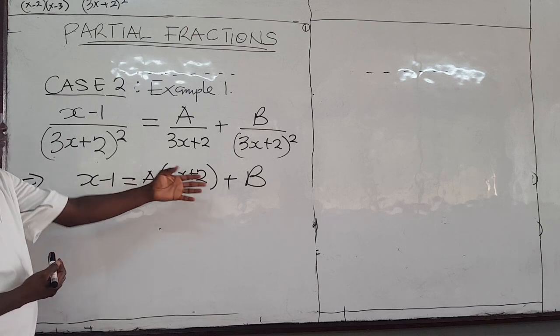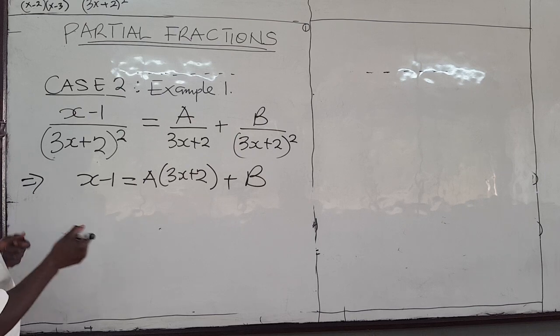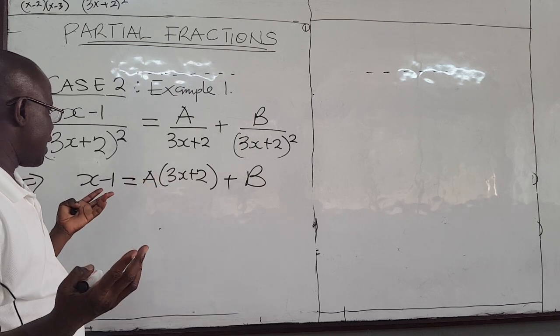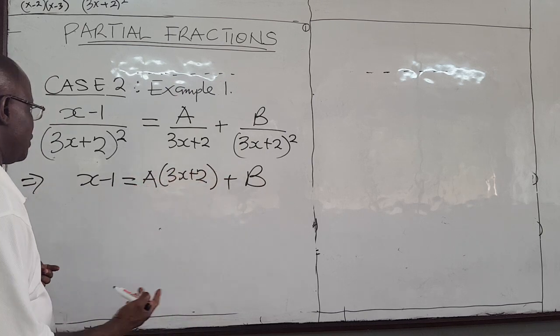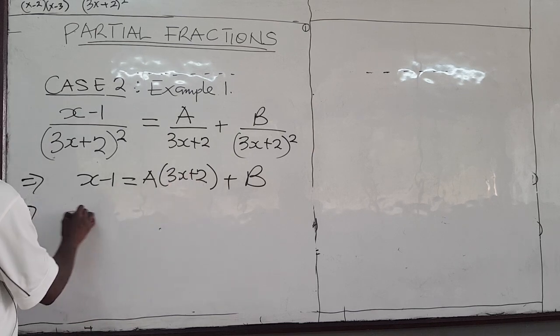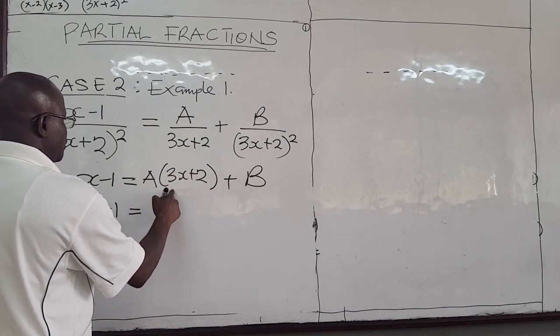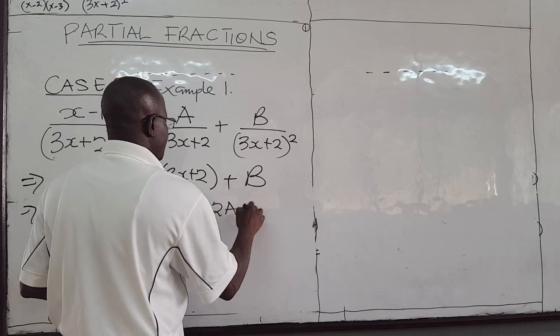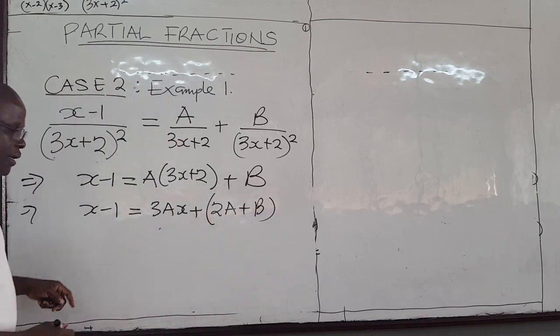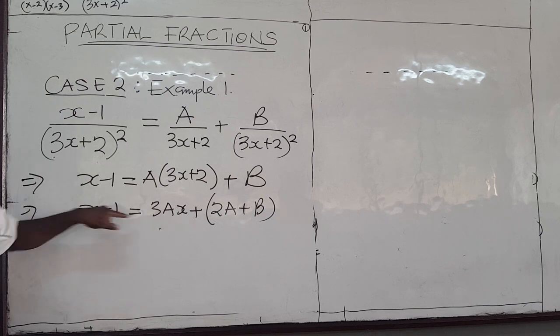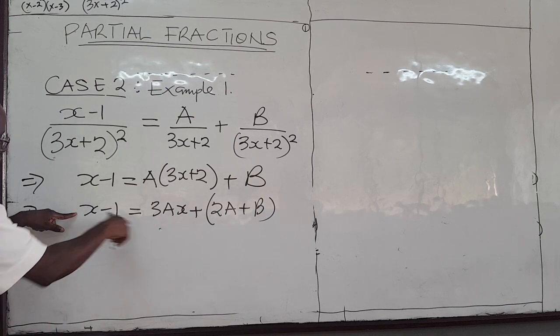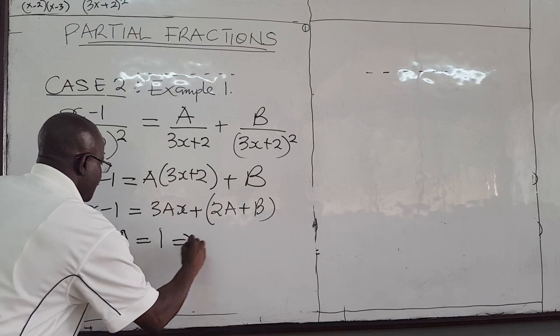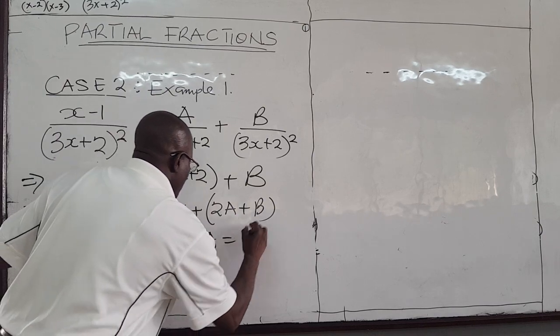So I want to solve for A and B. I can choose any two values of x, plug them in there and solve for A and B, or I can expand as we did before. So for instance, if I expand this, I'm going to have x minus 1 to be equal to 3Ax plus 2A plus another constant which is B. If I compare the coefficients, I have 3A would be equal to 1. The coefficient of x is 3A, here is 1. So 3A is equal to 1, which implies that dividing both sides by 3, A would be 1 over 3.